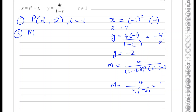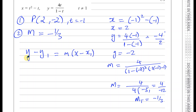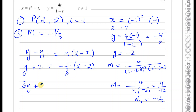That's 4 over negative 12, so the gradient of the tangent is equal to minus 1 third. So we're doing y minus y1 equals m times x minus x1. We know y1 is minus 2, so you have y plus 2 equals minus 1 third times x minus 2. Multiplying everything by 3 to get integers: 3y plus 6 equals minus x plus 2.